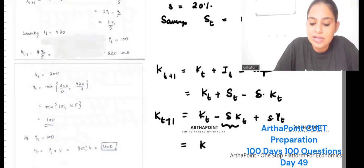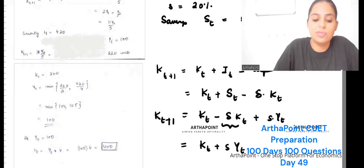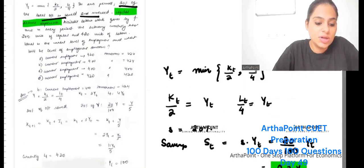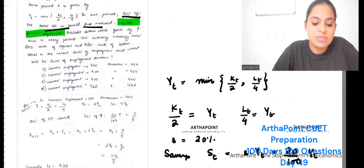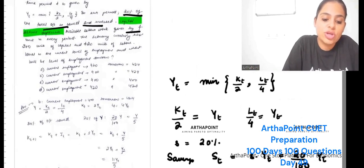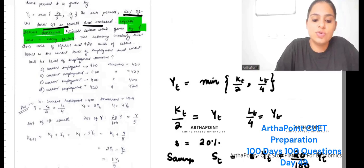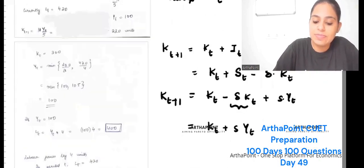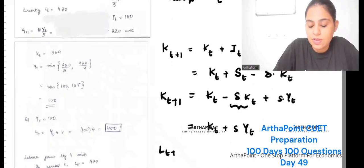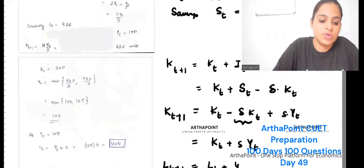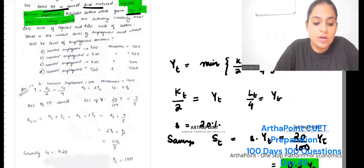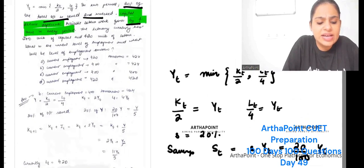Since depreciation is zero, capital in period t+1 will be K_t + S*Y_t. It also says the available labor stock grows by 4 units, which means L(t+1) = L_t + 4.